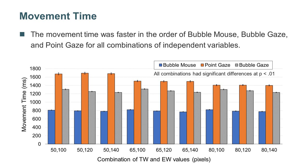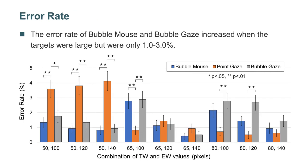However, the bubble gaze cursor was significantly slower than the original bubble cursor technique that featured a mouse. The error rate of bubble mouse and bubble gaze increased when the targets were large, but were only 1.0 to 3.0%.